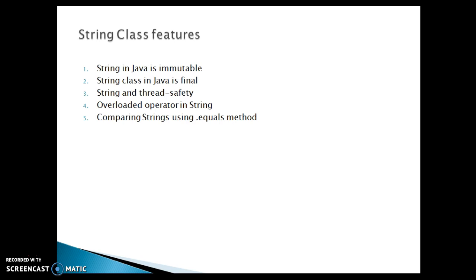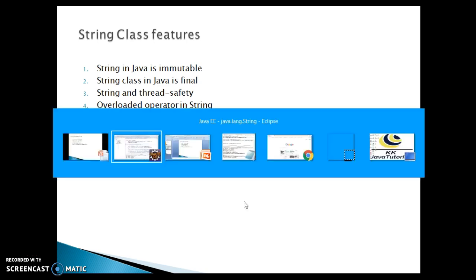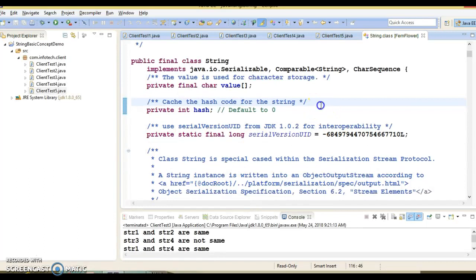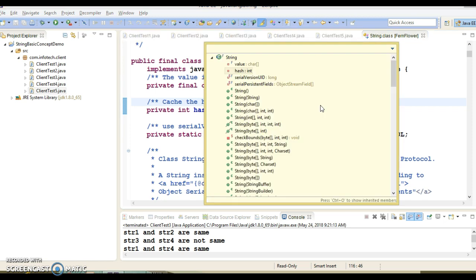Being immutable means whenever you perform any operation on a string which alters its content, a new string object is created which contains the modified string. The original string is left as it is. If there are no references to the original string, it is garbage collected. If you go to the string class, you will find many methods that essentially modify the original string.